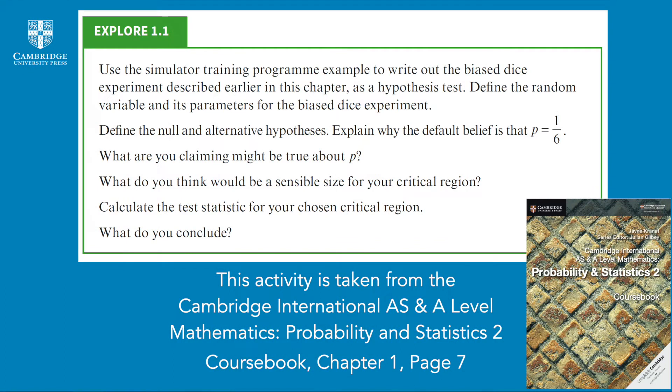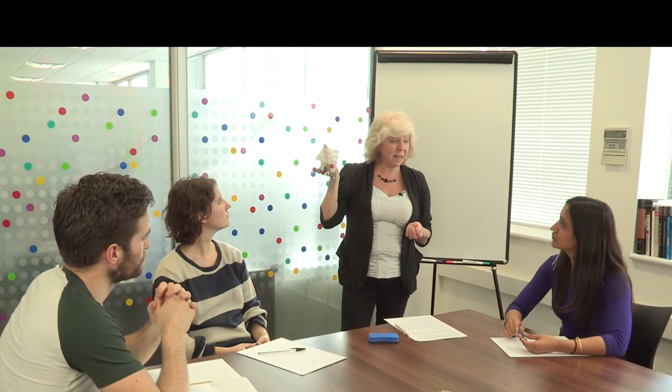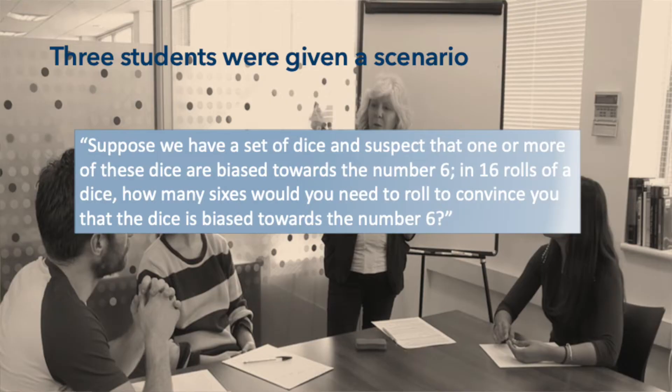So suppose we have more than four dice. I have got here a bag of dice. And suppose we suspect that one or more of these dice might actually be biased towards the number 6. To prove our suspicion is true with absolute certainty we would need absolute knowledge. We can't really achieve that, we can't roll these an infinite number of times. However, we could roll them say 16 times. So suppose you were to take one of these dice and roll it 16 times, how many times do you think you would need to get a number 6 to convince you that it might be biased towards the number 6?